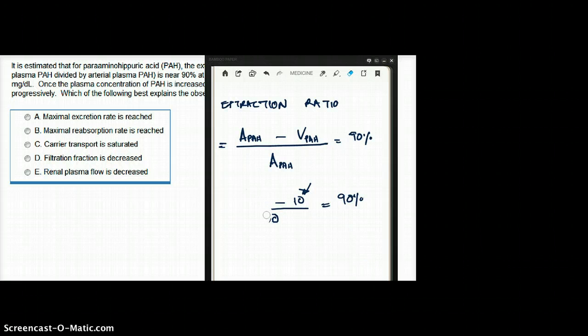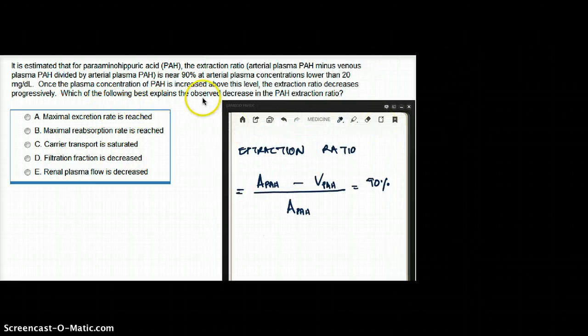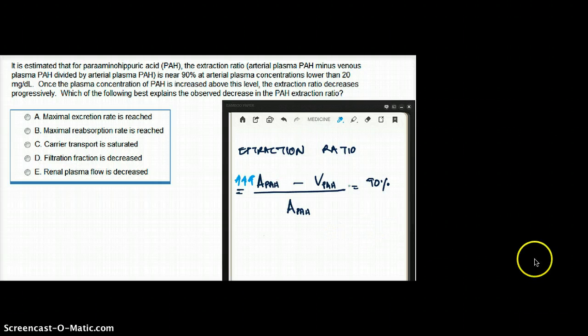So another thing is, they're saying that if the arterial concentration of PAH is 20 mg per deciliter or less, then the extraction ratio is going to be 90%. But if that value, once the plasma concentration of PAH is increased above this level, the extraction ratio decreases progressively. So if this value increases more than 20 mg per deciliter, then the PAH value drops.